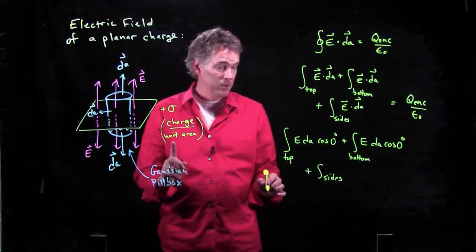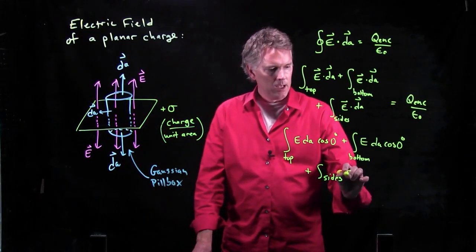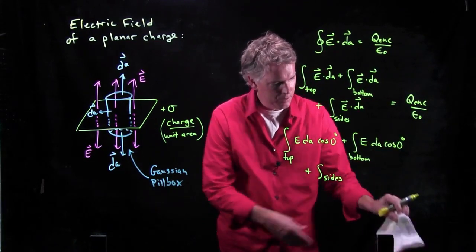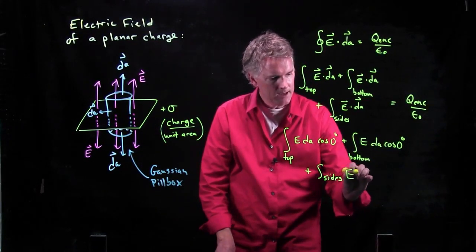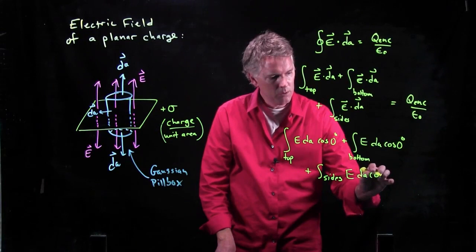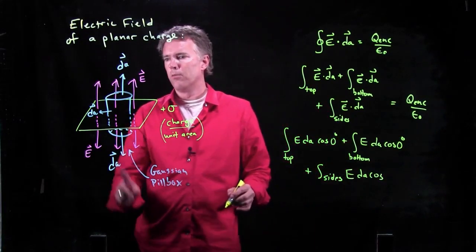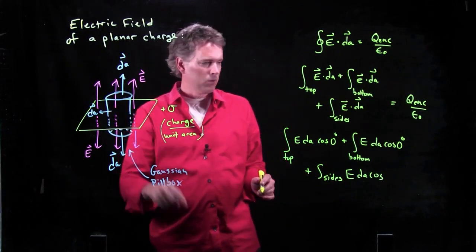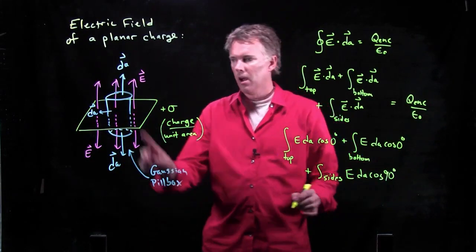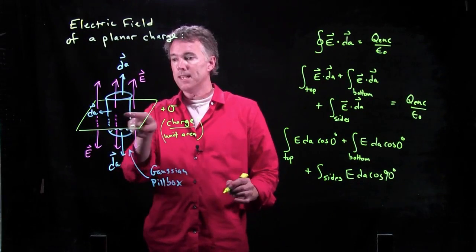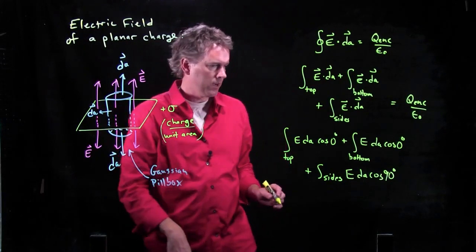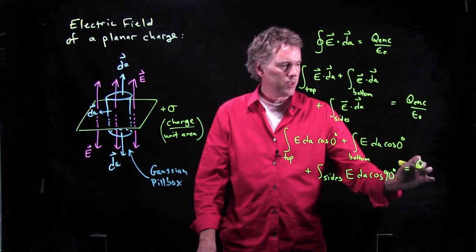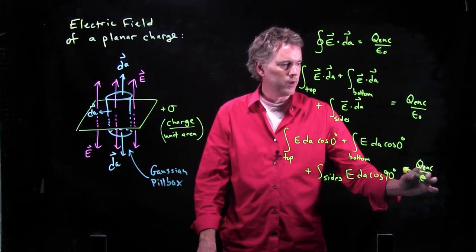And you can kind of see what's going to happen now. E DA, whoops, we take the vector sign off once we write the dot product. E DA cosine of what along the sides? Cosine of 90 degrees. Because E is pointing up or down, but DA is pointing out to the side. And so that whole term is going to go away. This whole thing is equal to Q enclosed over epsilon naught.